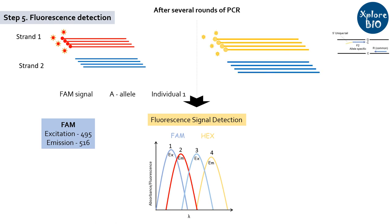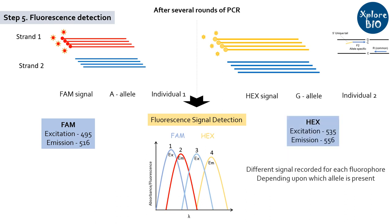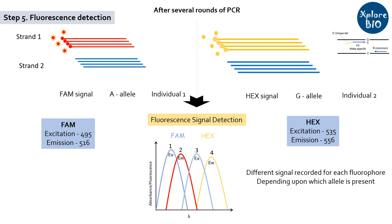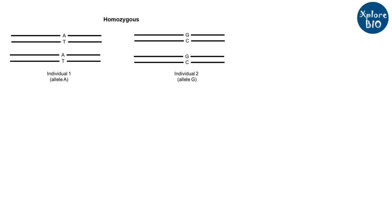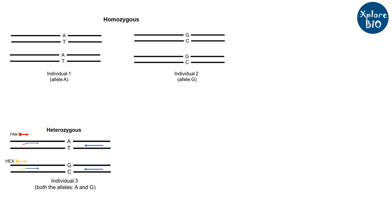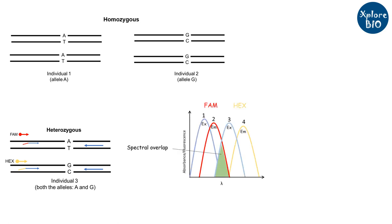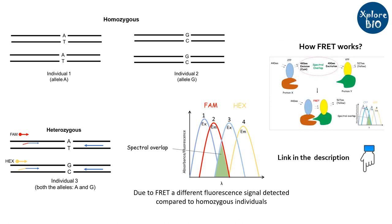Similarly, in the case of individual 2, the G allele-specific primer F2 can bind but F1 cannot. The yellow tail complementary to the HEX fluorescent probe will bind and emit a different fluorescence signal to that of the FAM probe. This is the case when you have a homozygous individual in which both genomic copies of that locus carry the same allele — A or G. Suppose in individual 3 you have one copy of the genome carrying allele A and another copy carrying allele G. As CASP markers are co-dominant, they can easily distinguish homozygous and heterozygous alleles. In such a case, both allele-specific forward primers F1 and F2 and a common reverse primer can bind the DNA, and both FAM and HEX probes can bind and emit fluorescence. Due to the phenomenon of FRET (fluorescence resonance energy transfer), a different type of fluorescent signal is emitted which can be detected by the instrument.